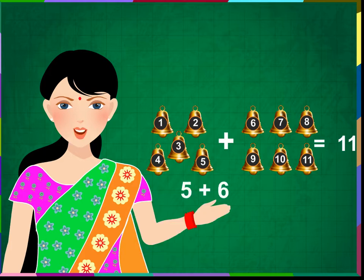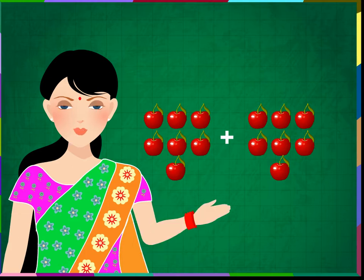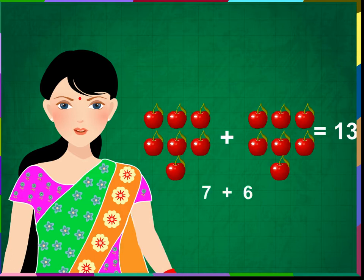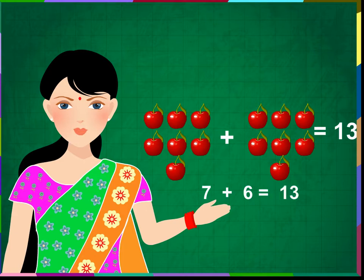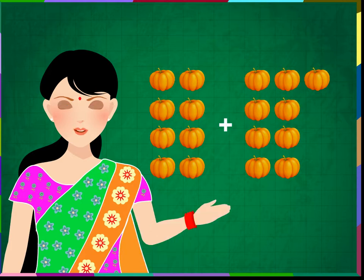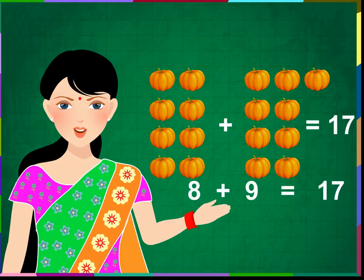5 plus 6 is equal to 11. Count the cherries and write the sum. 7 cherries and 6 cherries make 13 cherries. 7 plus 6 is equal to 13. 8 pumpkins and 9 pumpkins make 17 pumpkins. 8 plus 9 is equal to 17.